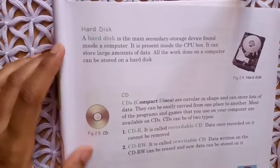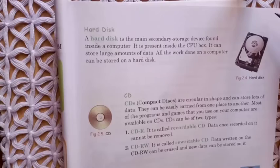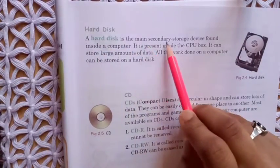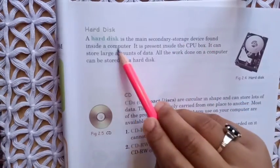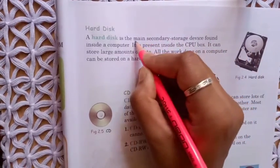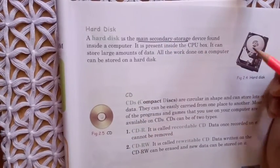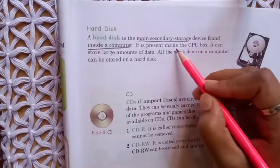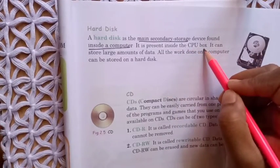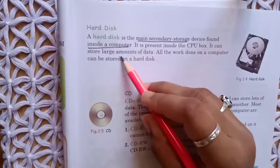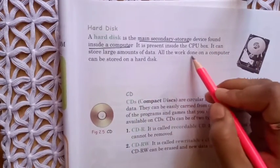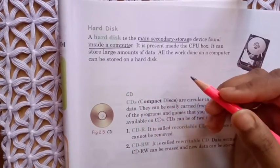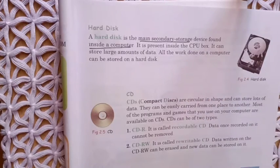Secondary storage devices can store large amounts of data permanently for a long time. First one is hard disk. A hard disk is the main secondary storage device found inside a computer. It is present inside the CPU box and can store large amounts of data — all the work done on a computer can be stored on a hard disk.